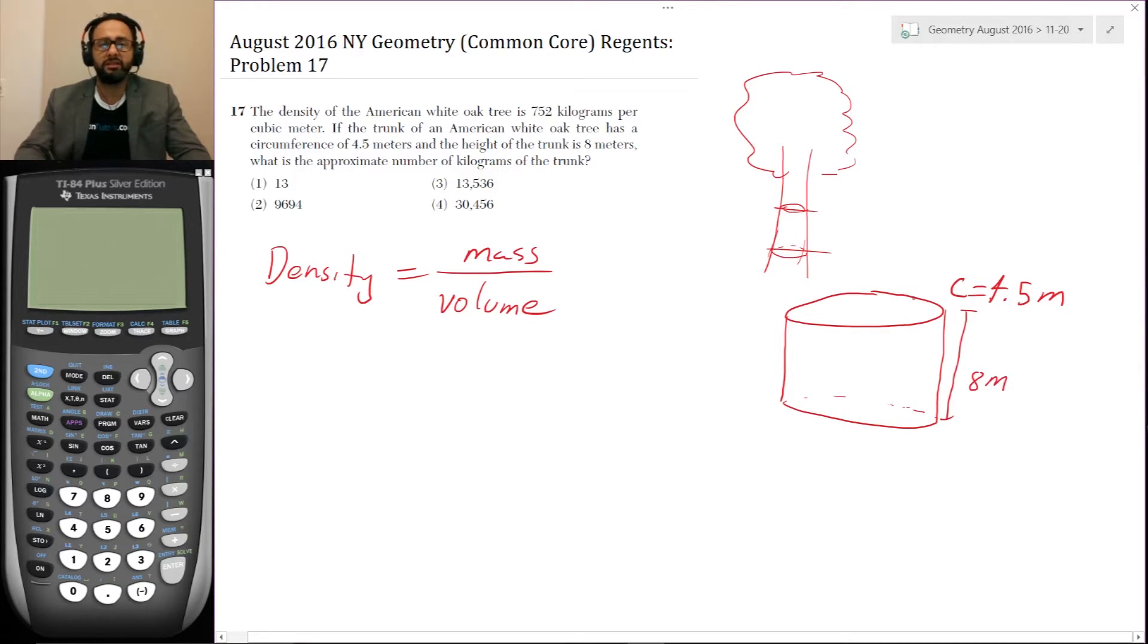Okay. Well, let's see. The density is 752 grams per kilogram per cubic meter. So that's 752 is equal to, now we need to know the mass. We're looking for the mass. We're looking for the approximate number of kilograms of the trunk.